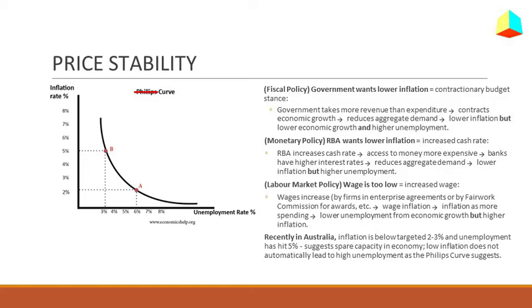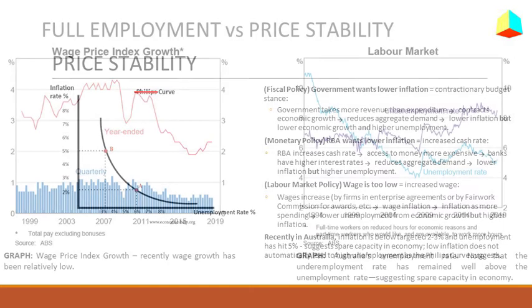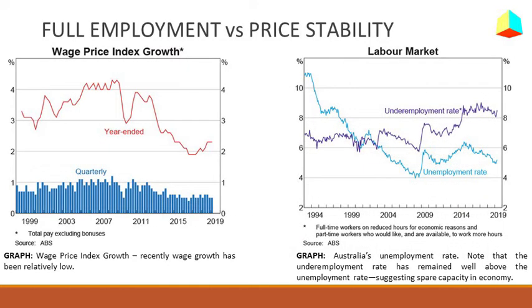Recently, Australia's RBA has reduced its cash rates and focused on its dual mandate goals. Labour market policy: the last two levels of inflation are required, but if the unemployment rate is reduced from 3% to 5% of the NAIRU, then labour adjustment will be normal.